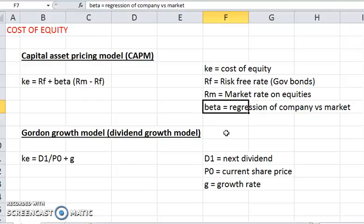So the beta is just a regression of how the company's share price moves relative to the market. So you can see the CAPM then is the risk-free rate plus the market premium but multiplied by the beta of the company. And that will give you the cost of equity for the specific company.